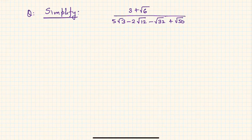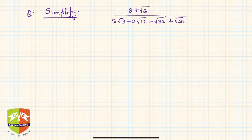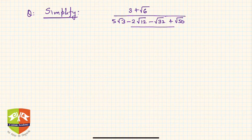Hello friends. In this question, we need to simplify (3 + √6) divided by (5√3 - 2√12 - √32 + √50). That's a complex looking expression we need to simplify.